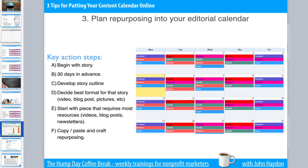Start with the piece of content that requires the most resources — typically that's going to be a video, blog post, or newsletter. As you're writing and researching it, collect all the various snippets of content for other platforms like Facebook, Twitter, and so forth. By the time you're done with the blog post, you've already got 10 or 12 tweets and maybe three or four Facebook updates ready to go right when you hit publish. You can repurpose content from inside the blog post to lead people back — when they see it on Twitter and click the link, they go back to the blog post, driving a lot more traffic.